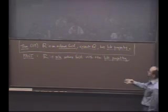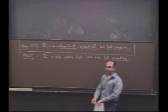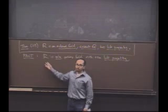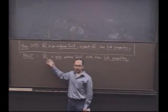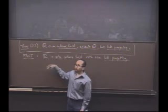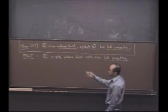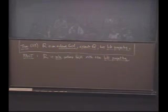So if you see any other field with the least upper bound property, I claim it is, in some sense, isomorphic to R. You'll be able to find a way to map the elements of that field into the elements of R in a one-to-one and onto way that preserves all the field operations.